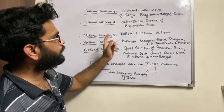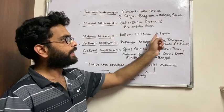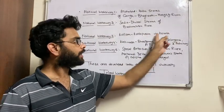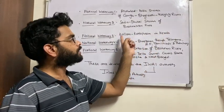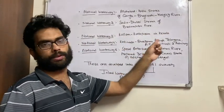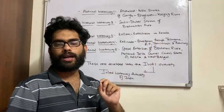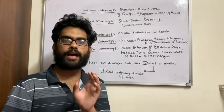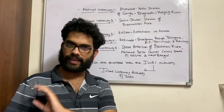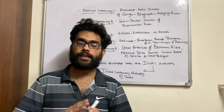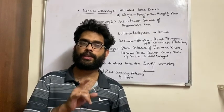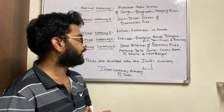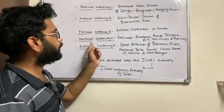National Waterway 3 is basically in the state of Kerala, which connects Kollam and Kottapuram. You can remember it as 'KKK — Kollam Kottapuram Kerala.' This is National Waterway 3.